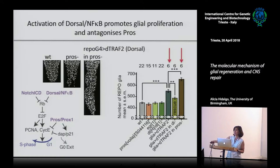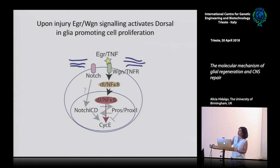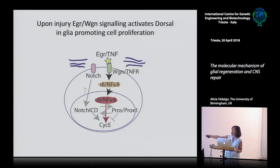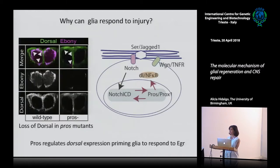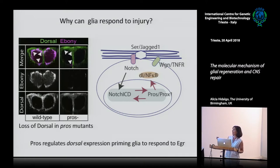Prospero inhibits cell cycle entry; Dorsal promotes cell cycle entry. During injury, Eiger (TNF), through Wengen (the TNF receptor), provokes the nuclear translocation of NF-kB, which now promotes cell proliferation. The reason glia can do this via Eiger is because Prospero, which is a transcription factor, regulates the expression of Dorsal. In a Prospero mutant, you lose both Ebony and Dorsal, meaning the expression of Dorsal depends on Prospero.